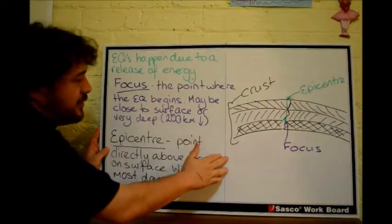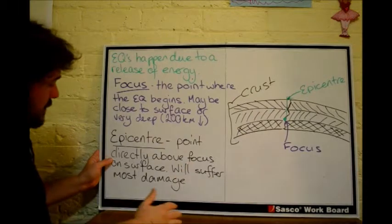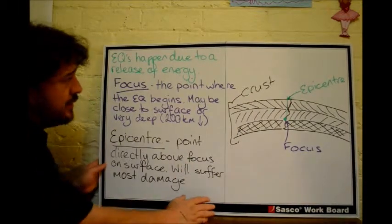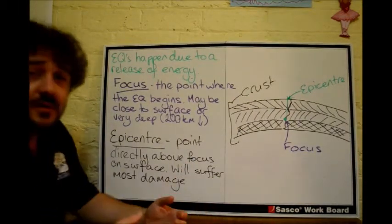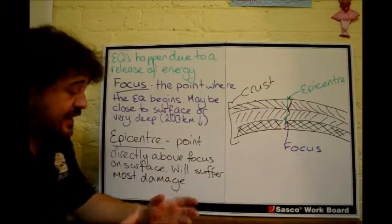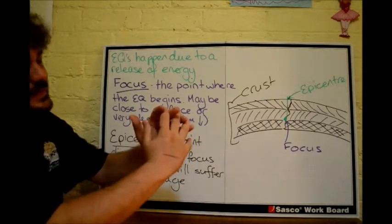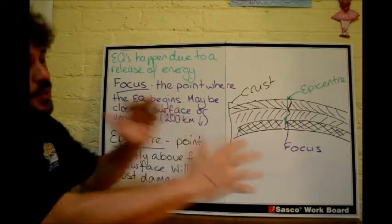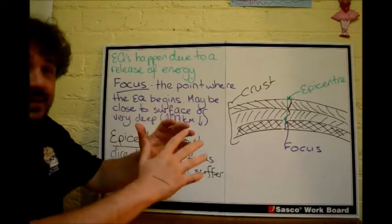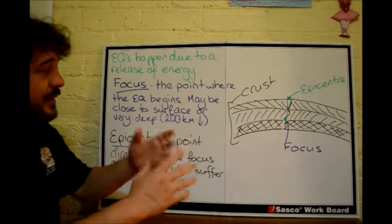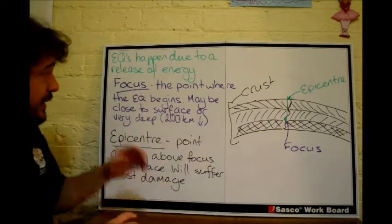As we know already, earthquakes happen due to a releasing of energy. You have the two plates pushing together, and then boom — they snap apart. And when they snap apart, that releases energy, and that's what causes our earthquake.